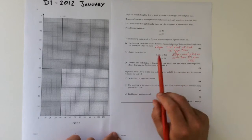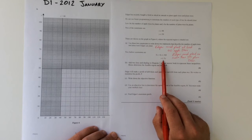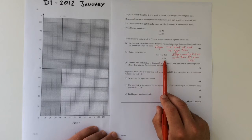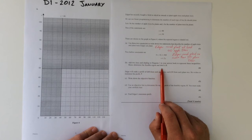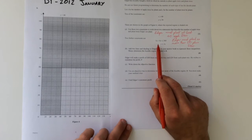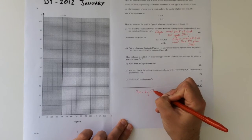Next part. Two further constraints are given by 3x plus 4y is less than or equal to 360, and x is less than or equal to 2y. We've got to add lines to the diagram, determine the feasible region, and label it R. So I'm going to work first of all with this one, 3x plus 4y is less than or equal to 360.